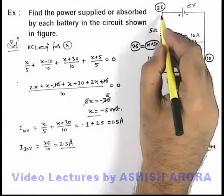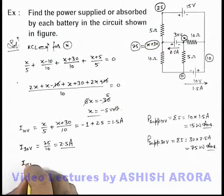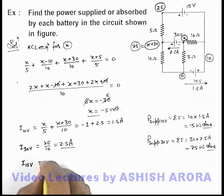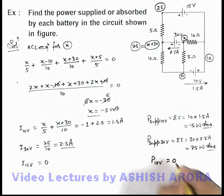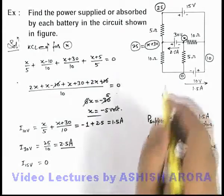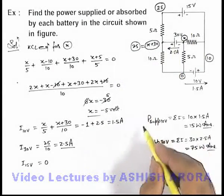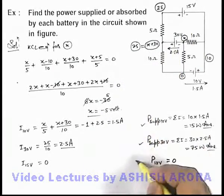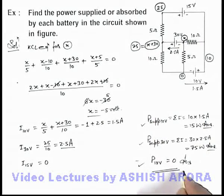Since no current is flowing in this branch, the current flowing through the 15 volt battery is zero, and the power of the 15 volt battery is also zero — this battery is neither supplying power nor absorbing power. So these are the three answers for the individual powers associated with the three batteries.